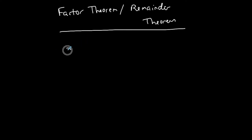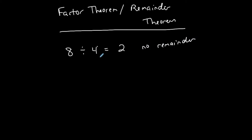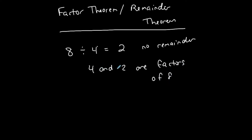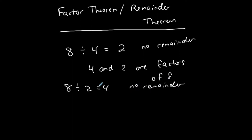Let's talk about the number eight. I know that eight, when divided by four, will give me the number two with no remainder — zero remainder. That means that four and two are factors of eight. They're numbers that can be multiplied to give me eight, or I can divide eight by each of these without a remainder. Eight divided by two is four with no remainder. So a factor is something that goes into a number without a remainder.